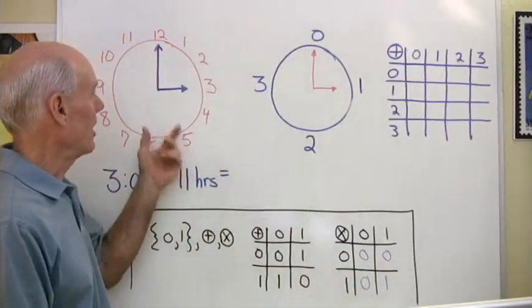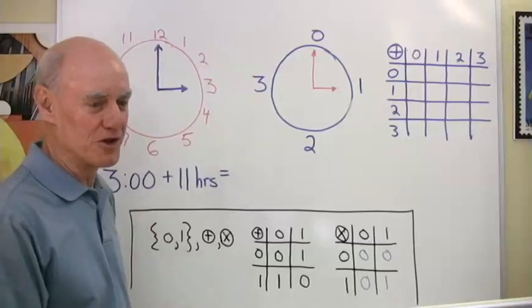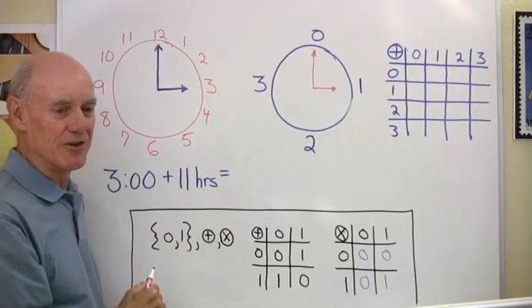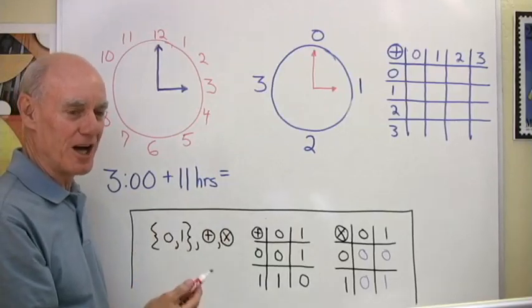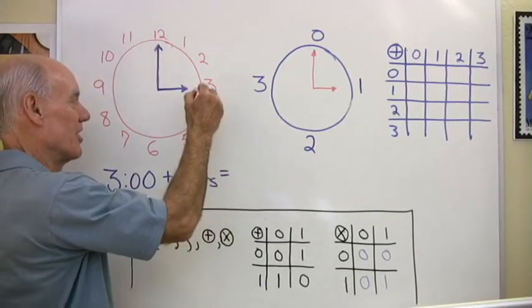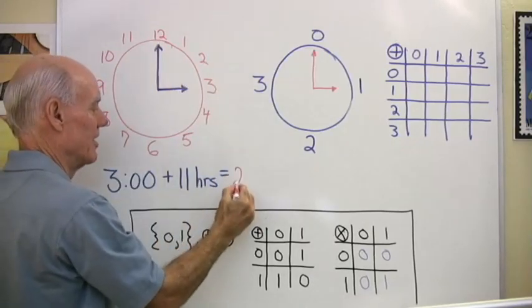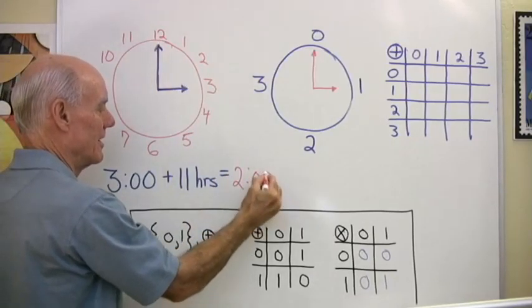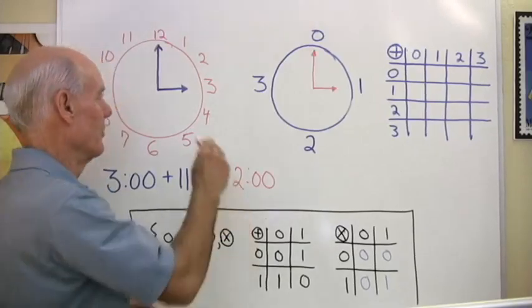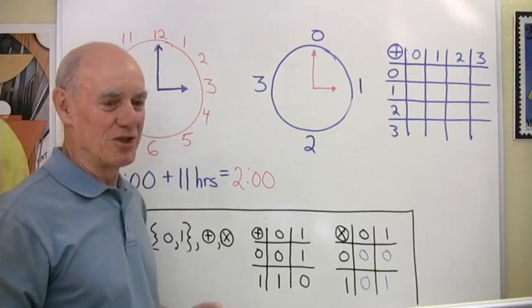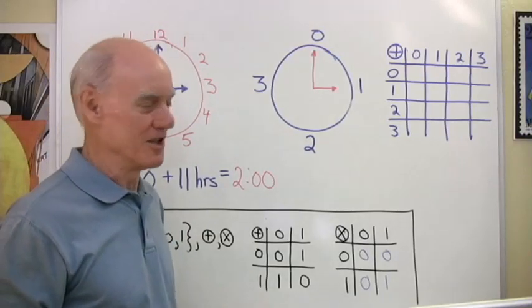Here's just a regular clock, a 12-hour clock like we're used to seeing. And here's the question: if it's 3 o'clock and you add 11 hours to that, what time is it then? Well, here's 3 o'clock, if I add 11 hours, I end up back at 2 o'clock. So that's clock arithmetic and what happens is you go to the number 12 and then you start over again.